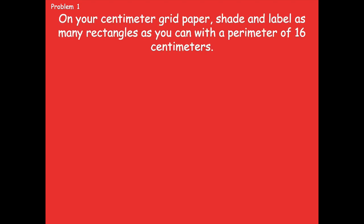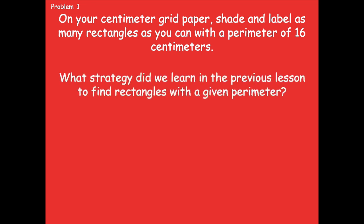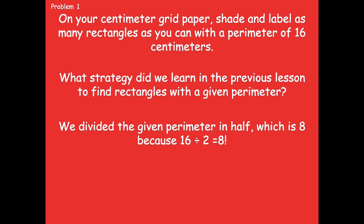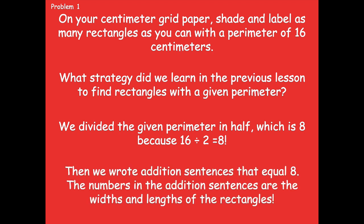Let's look at problem one. It says on your centimeter grid paper, which is your lesson template, shade and label as many rectangles as you can with a perimeter of 16 centimeters. Before we get started, let's talk about what strategy we learned in the previous lesson to find rectangles with a given perimeter. We had to do something with that perimeter before we could even start drawing.